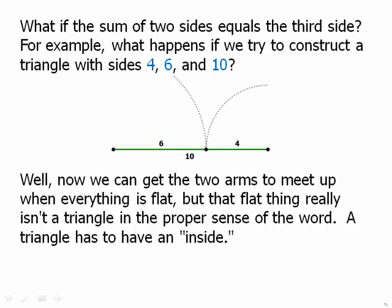A triangle has to have an inside. It has to have area. So this flat thing does not meet our requirement for what a triangle is. This is what happens if we have two sides equal. Their sum is equal to the third side. And so this is why not only the less than case is excluded, but also the equal to case is excluded. The sum of two sides has to be greater and only greater than the third side.